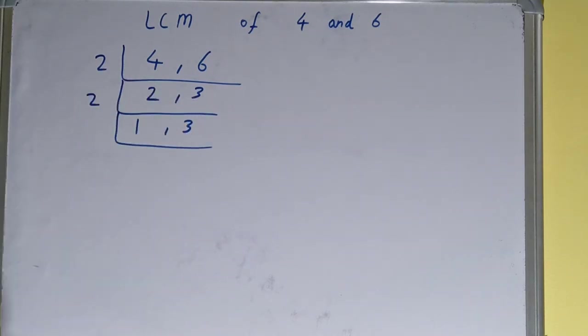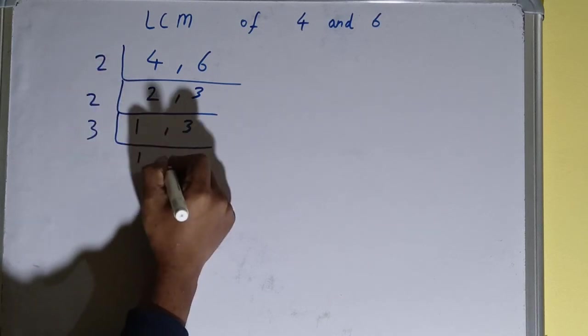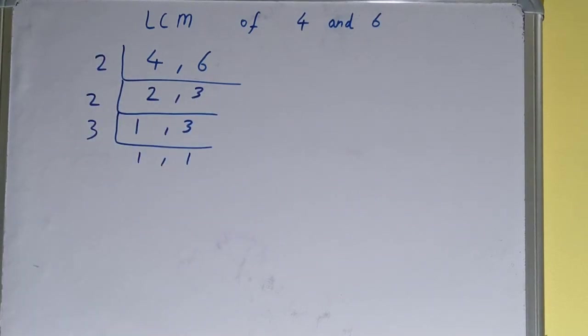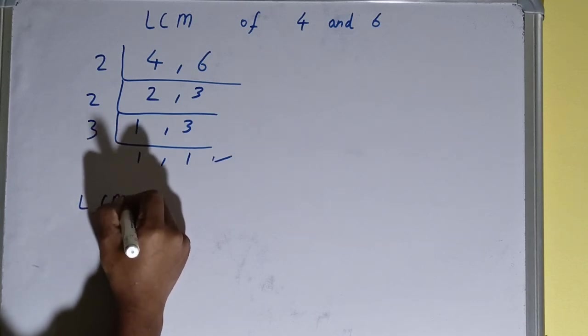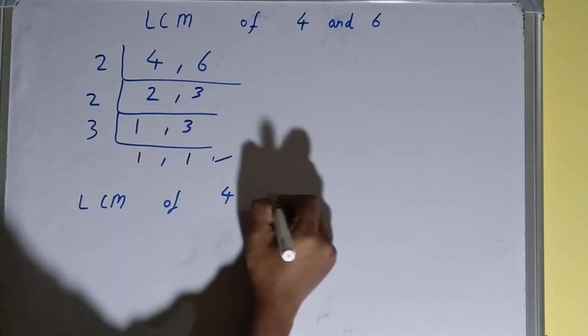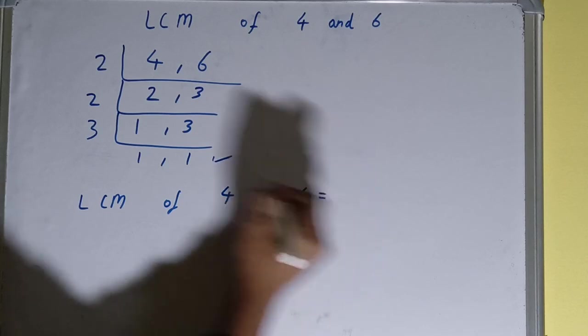This one is divisible, so divide it. We'll be getting 1 comma 1. Once you get 1 comma 1, you need to stop and do one last thing: that is, LCM of 4 and 6 equals to...